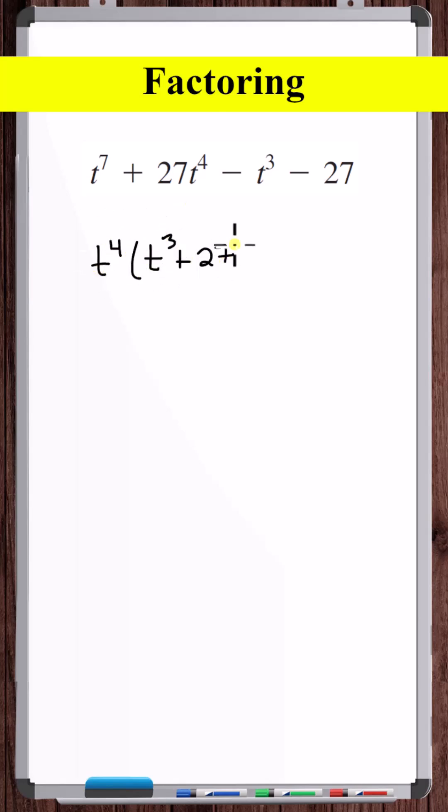And let's factor out a minus one from these two terms. Now let's factor out a t cubed plus 27 from this entire expression.